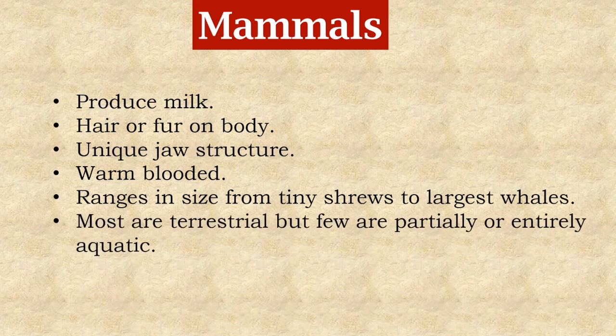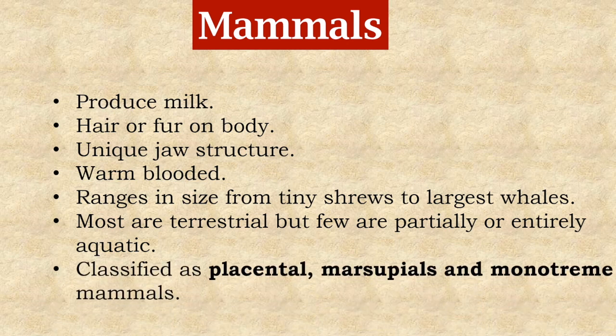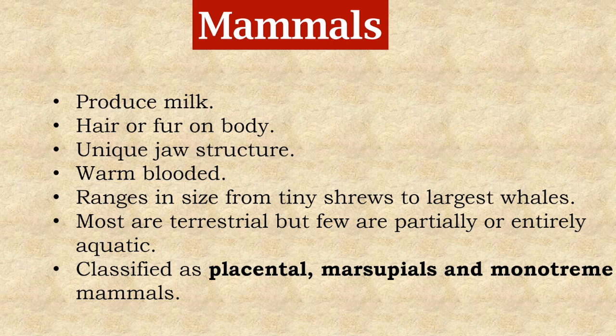Most mammals are terrestrial, but a few are partially or entirely aquatic. Mammals are classified as placental, marsupials, and monotremes. Placental mammals give birth to well-developed young. Marsupials give birth to undeveloped young and nourish them in a pouch until they fully develop. Monotreme mammals lay soft-shelled eggs which hatch.